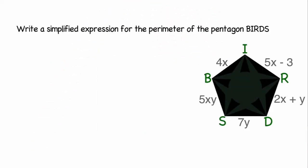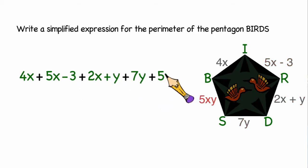Now let's say that we were asked to simplify the expression for the perimeter of the pentagon BIRDS. Well, the first step is to find the perimeter by adding all the sides together. That would be 4x + 5x - 3 + 2x + y + 7y + 5xy.